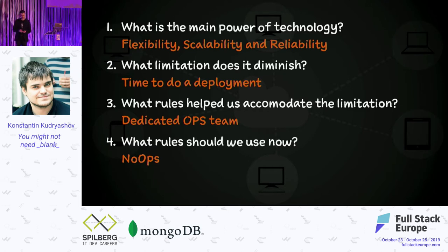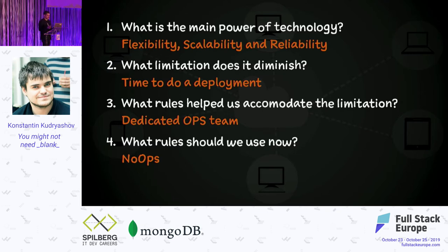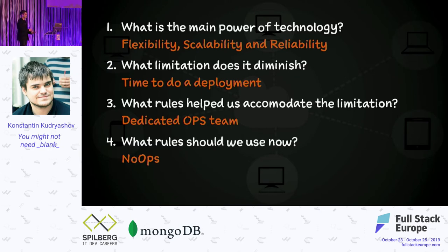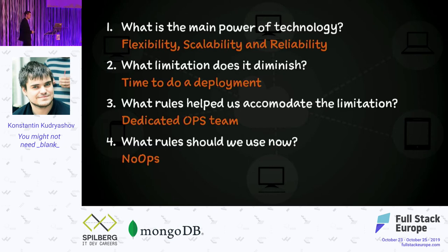But if you look at what people are actually doing, it's quite interesting. When we jump into the cloud, people register their AWS accounts, their Google Cloud accounts — and their dedicated ops team starts setting up virtual machines, firewalls, rules — like it's a physical server. So we still act, mentally or physically, as if there's a dedicated ops team. The time to deployment is still months or years — you still go through rounds and rounds of approvals.